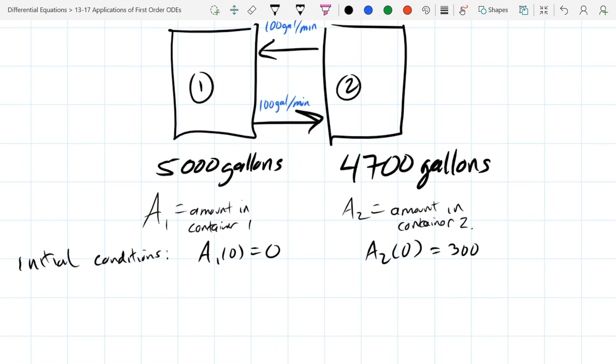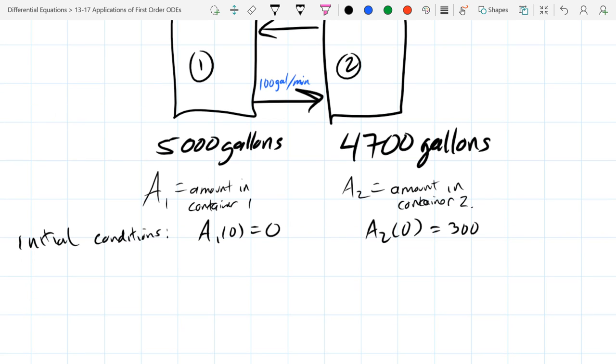We get some initial conditions. A1 of zero equals zero and A2 of zero equals 300. So initially all the chemicals are in tank number two and tank number one contains none of that chemical. You can think if it's salt and we're talking about salt inside water, then at the very beginning container one is fresh water, container two is salt water.